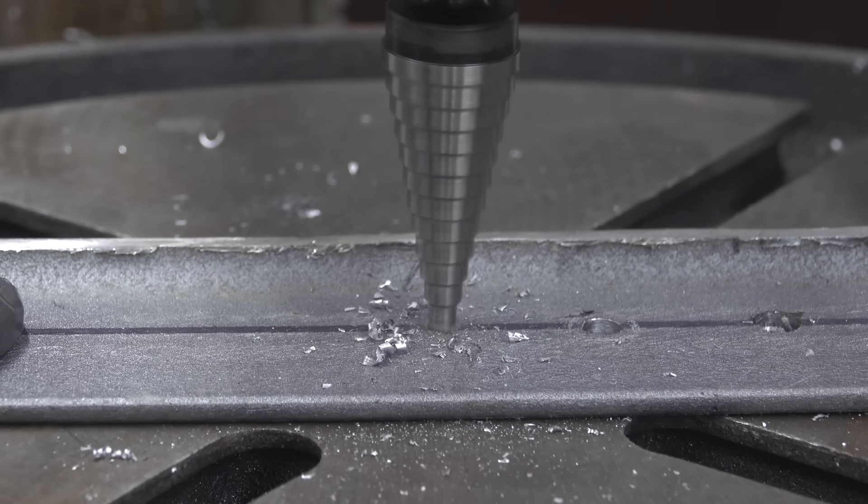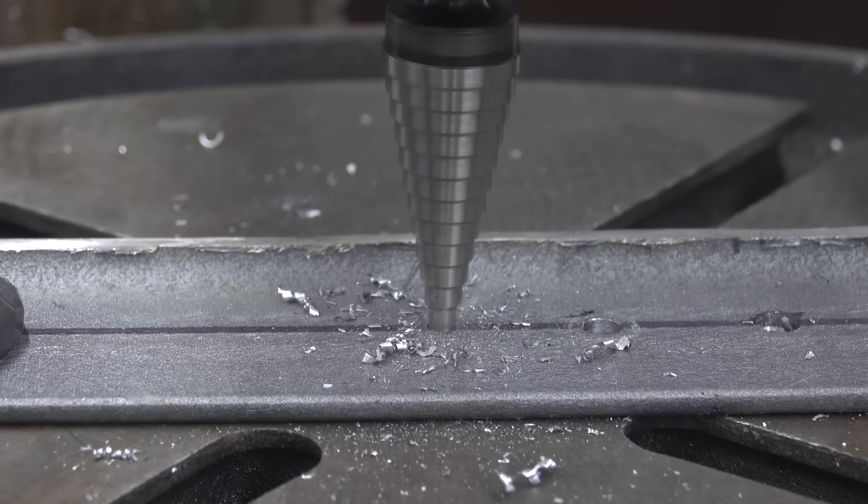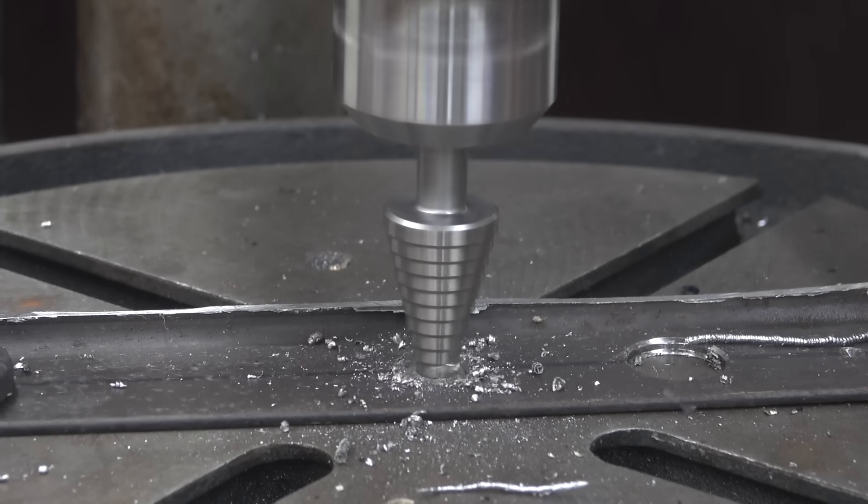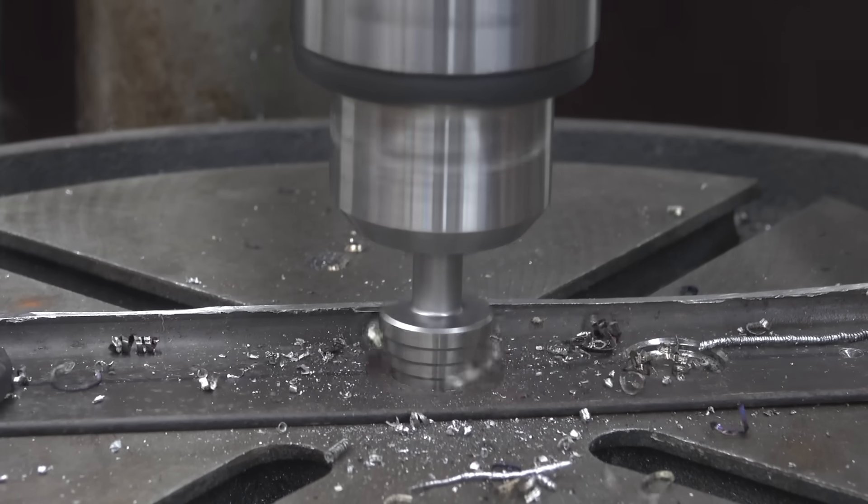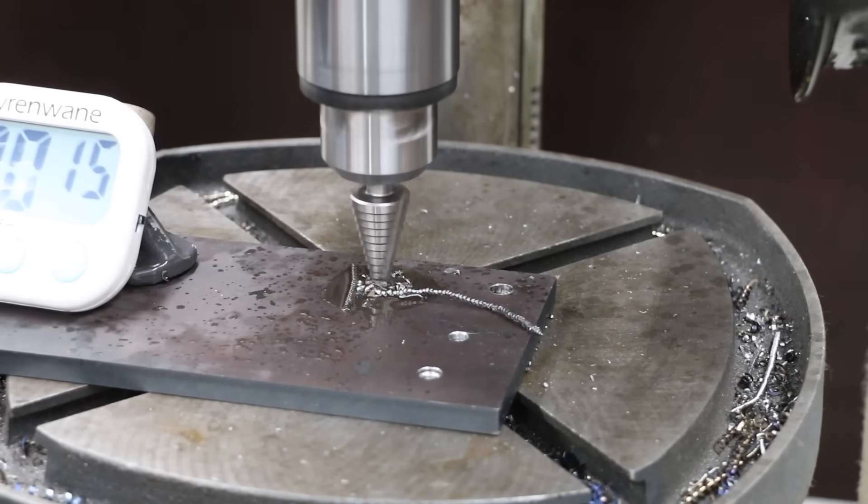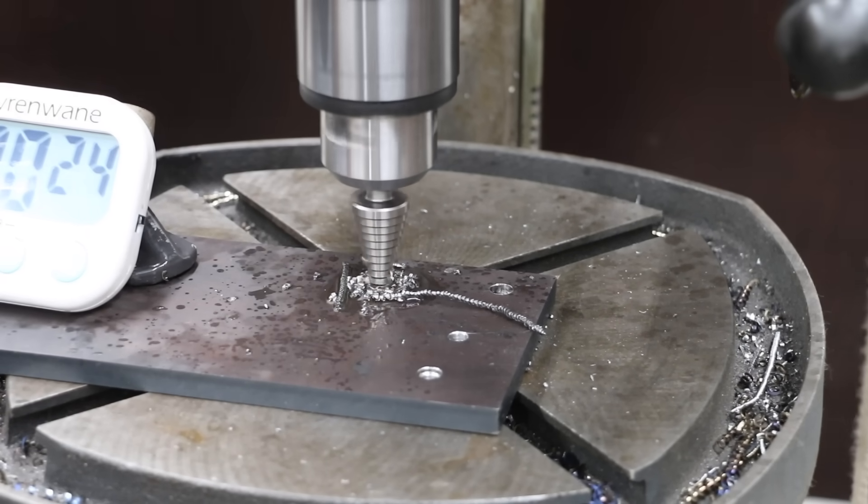In the first test, we'll see which brand drills the fastest through mild steel and if any are better than an ordinary twist drill. In the second test, we'll see which step drill is the fastest at drilling completely through medium hardness steel. In the final test, we'll see which step bits can drill through some AR-400 armor plating and which ones will have a meltdown.